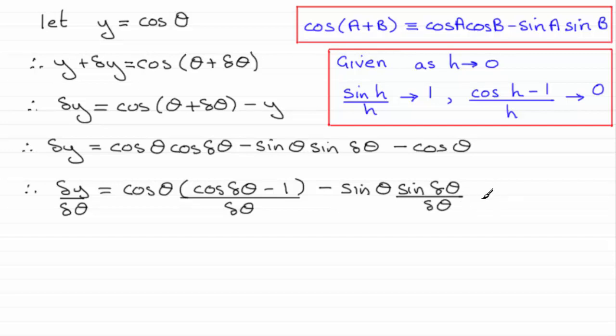Why did I do that? Well, I'm going to be picking up on this result here. Because what I'm going to do is let delta theta tend to 0. As delta theta tends to 0, then delta y over delta theta is going to tend to a limit, which that limit is going to be dy by d theta. So delta y over delta theta tends to a limit, which we call dy by d theta.